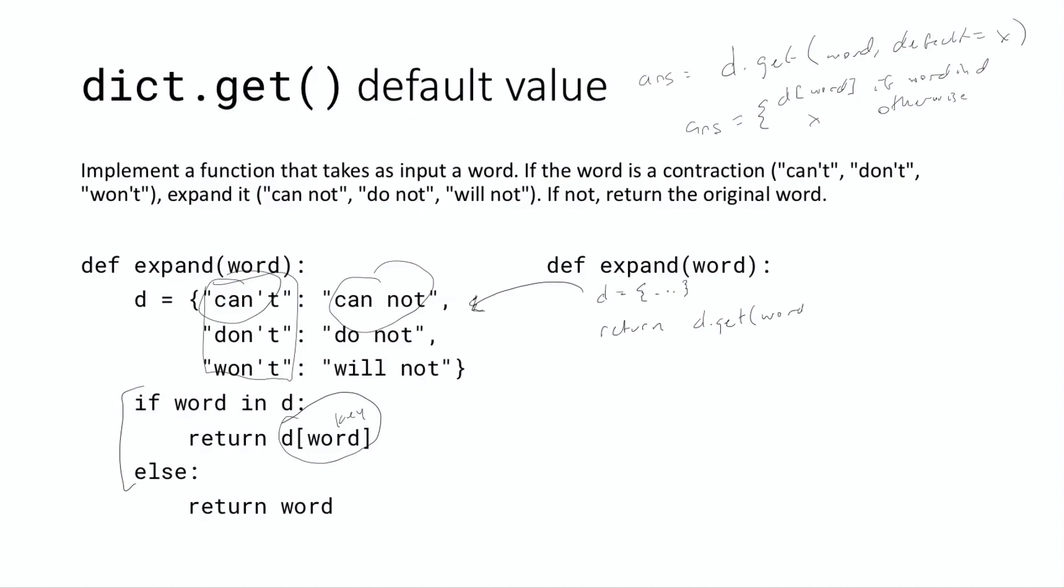And the key is word, and the default, we're going to write default equals because it's a positional argument to keyword argument, and the default is going to be equal to word. And again, this may look a little bit silly because you have word twice. But the idea is here, word is functioning as the key. And we're saying if this word is a valid key in the dictionary, we want to return its value. And so here, this would return the value in d, which would be the expanded form of the contraction.